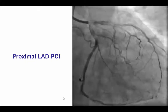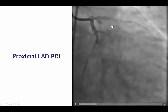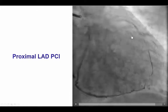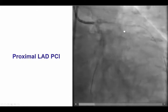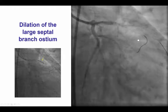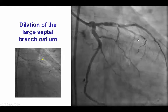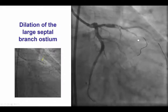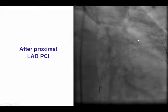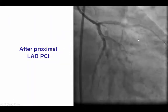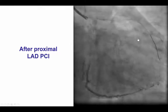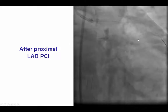The LAD did have a large septal branch — it was almost like a dual LAD system — and that is why a wire was placed into that large septal branch. The lesion in the LAD was predilated, and then a stent was placed in the mid-LAD, providing a nice result with continued flow into the large septal branch.